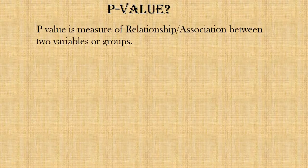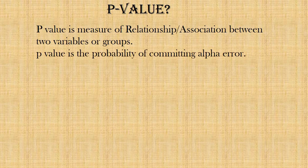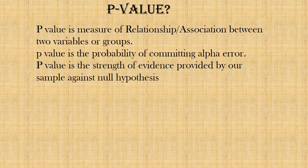So, to sum up, what is p-value? P-value is a measure of relationship or association between two variables or groups. P-value is the probability of committing alpha error. P-value is the strength of evidence provided by our sample against null hypothesis in order to accept our alternate hypothesis.